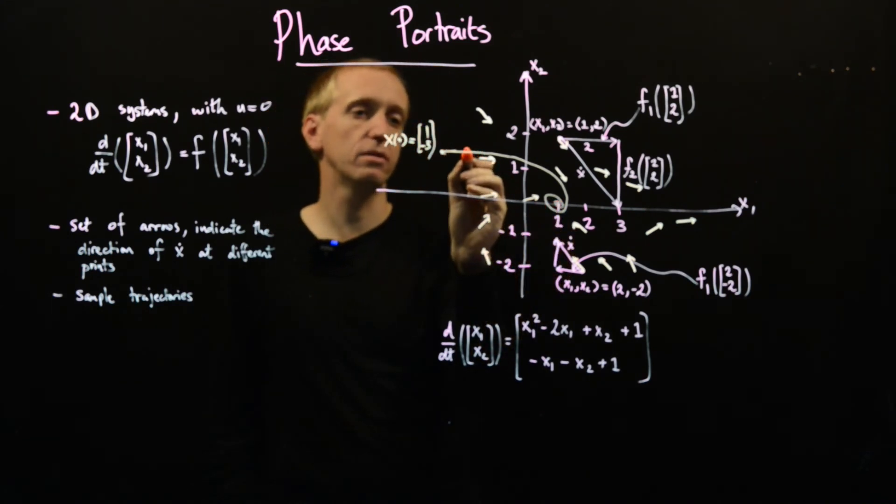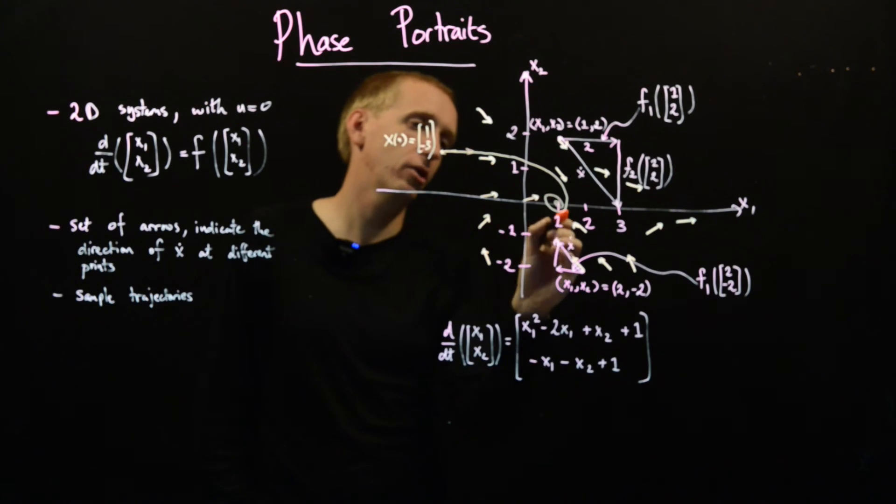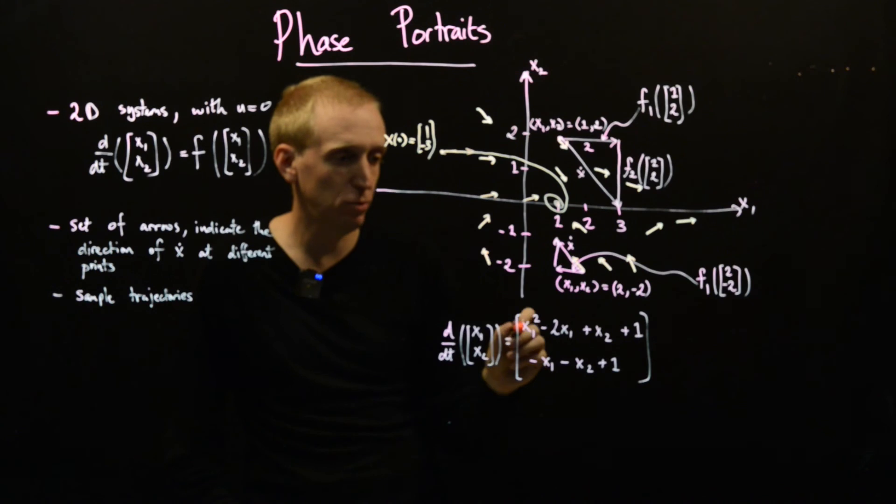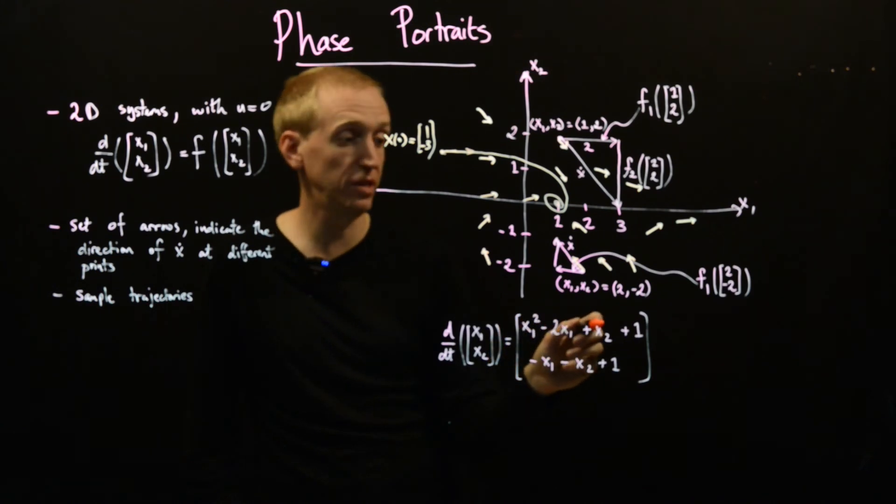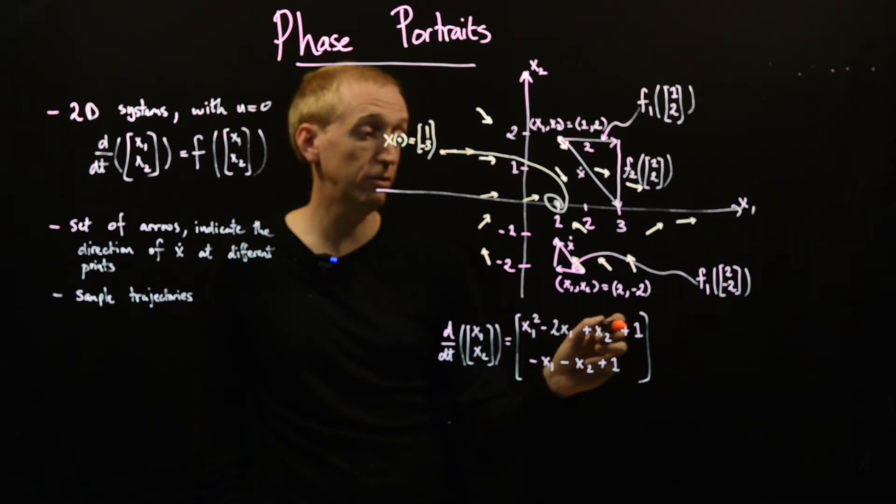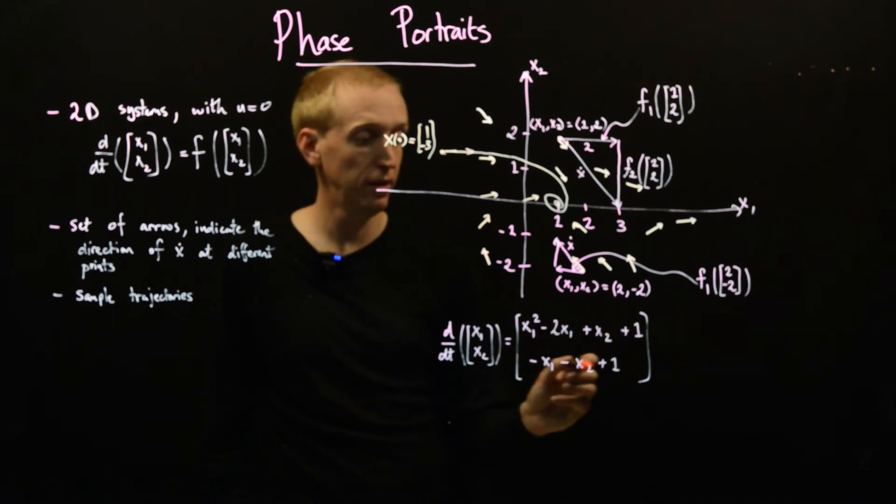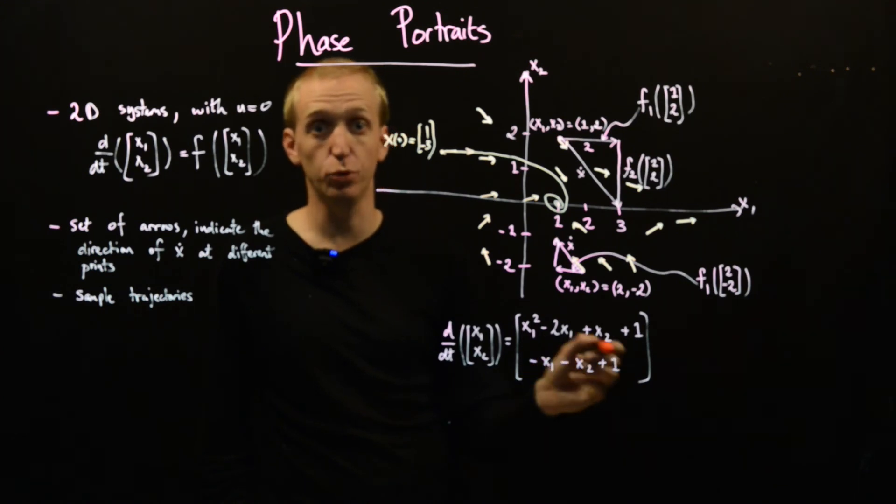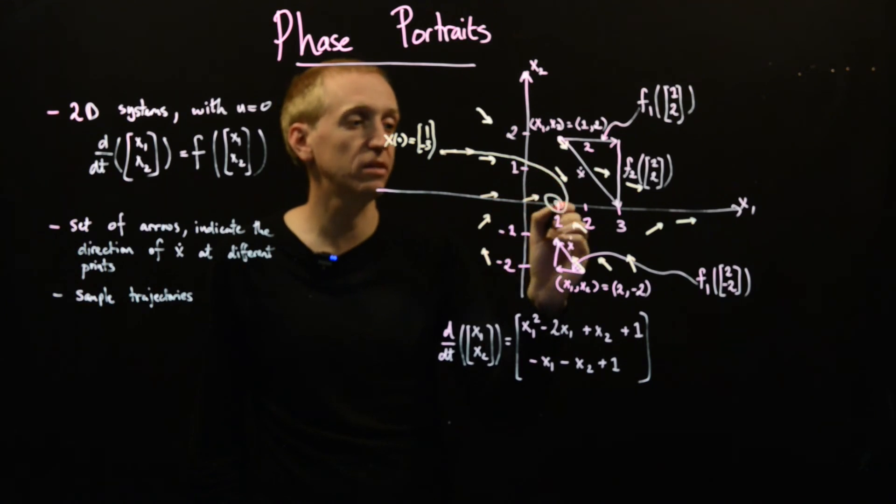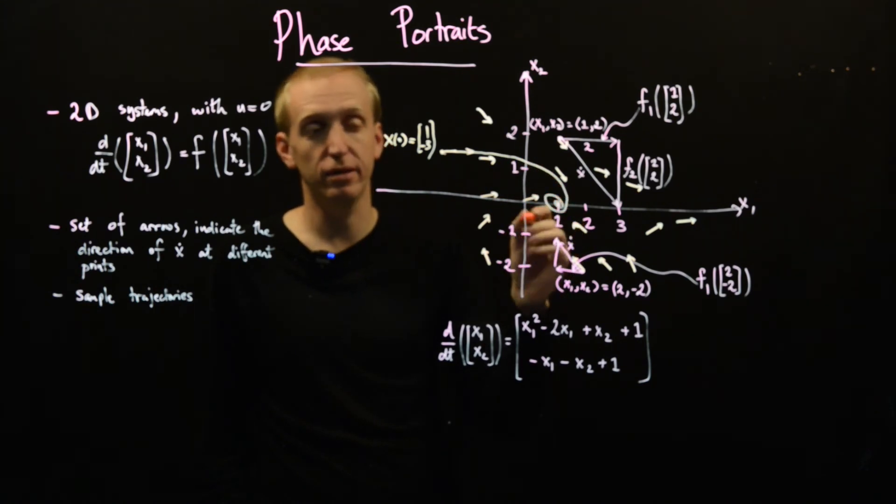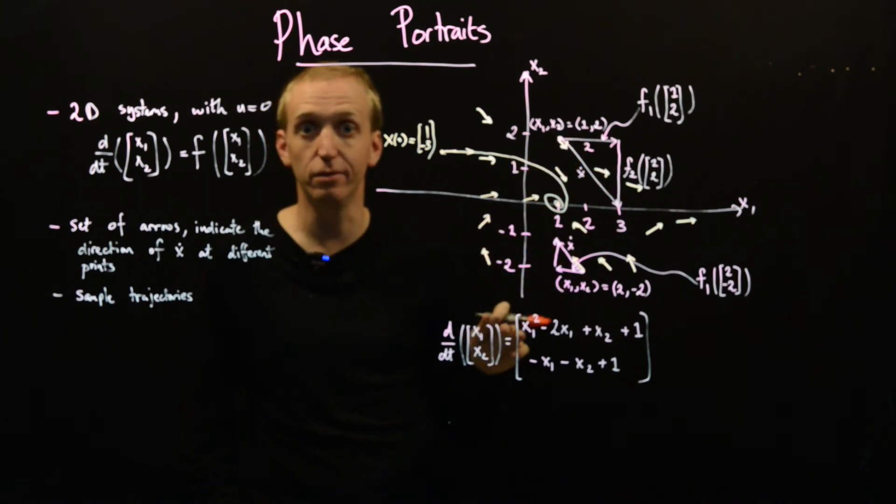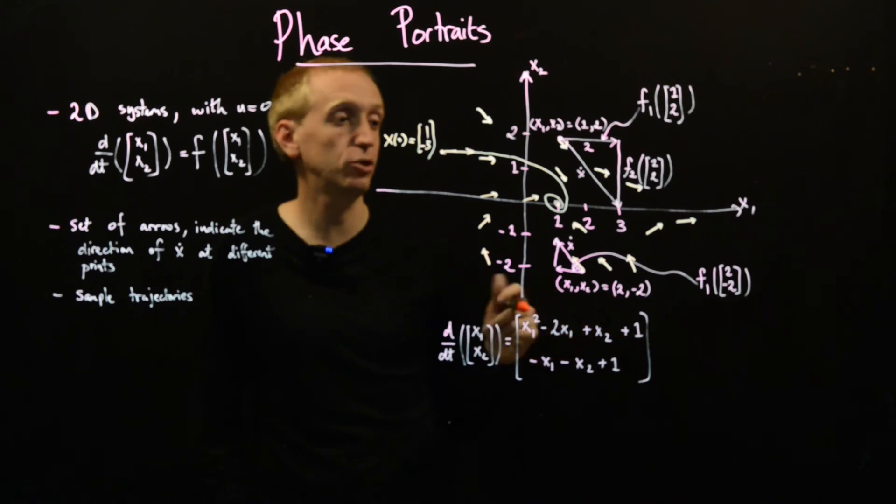And that's interesting, it seems to be spiraling in to the point 1, 0. Okay, well, why don't we just check that quickly? Well, if x1 is equal to 1 and x2 is equal to 0, well x1 dot, so that's 1 squared minus 2 plus 0 plus 1, which is 0. And here we get minus 1 minus 0 plus 1, which is also equal to 0. So this is an equilibrium point. When we simulated our system, it looks like a stable equilibrium point, and we'll use ideas based on this phase portrait to give definitions of stability in later lectures.